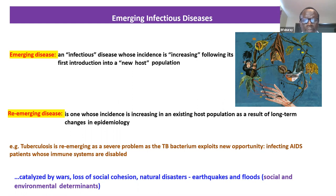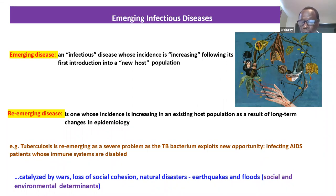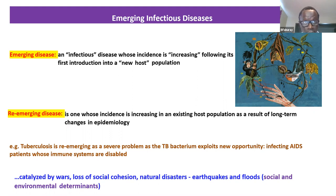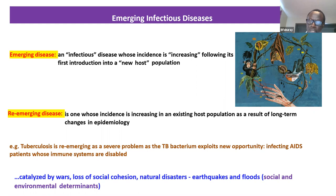Re-emergence of certain diseases can also be catalyzed by wars, loss of social cohesion, poverty, and natural disasters like earthquakes and floods. A classic example is cholera, particularly during outbreaks in Haiti and Zimbabwe. Some of this social destabilization can contribute to re-emergence of certain diseases. So it's important to distinguish between emerging disease and re-emergent disease.